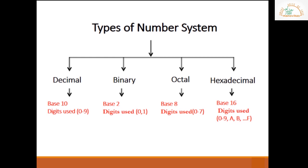Octal number system. The base is 8, so the digits which can be used in this number system will be 0 to 7. The number formed in this number system will be a combination of the digits from 0 to 7. Nothing more than 7 will be accepted as a digit in this number system.